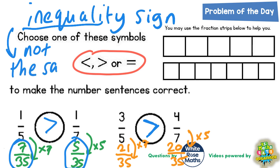So what you're actually saying with an inequality sign is the two sides are not the same. And 3/5 is not the same as 4/7 because 3/5 is bigger than 4/7. 21/35 is bigger than 20/35.